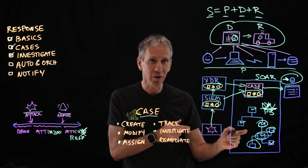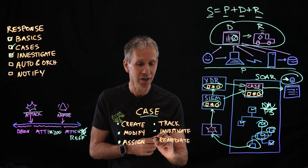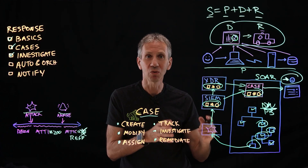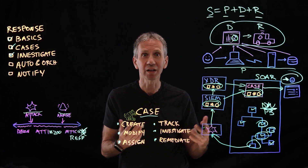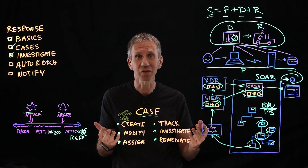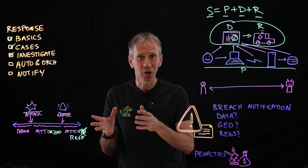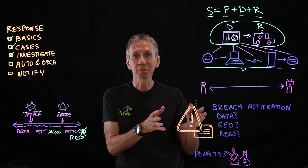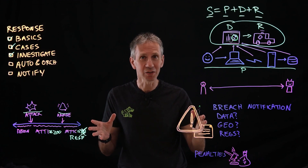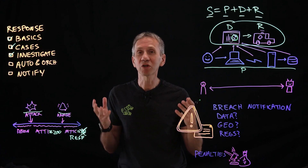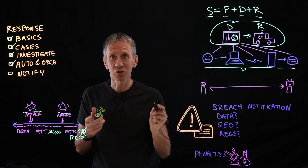Ultimately, the analyst figures out the source of the problem, and the playbook spells out the remediation steps. If data is leaking, stop that hemorrhaging. If a system is down, figure out how to bring it back up and protect it. So we get an indication of a problem, create a case in the case management system, and the cybersecurity analyst investigates and remediates. Why wouldn't we just automate everything? I'll address that next in automation versus orchestration.